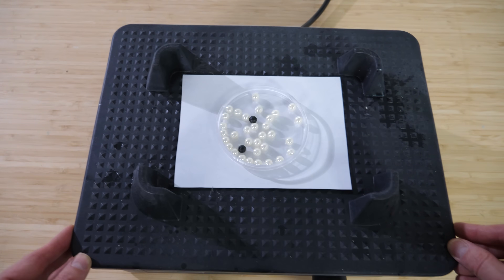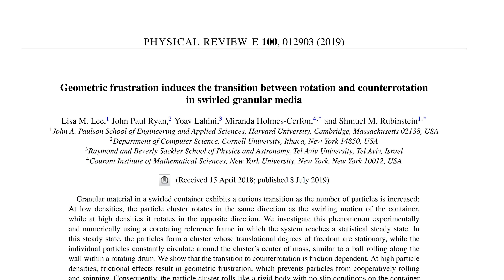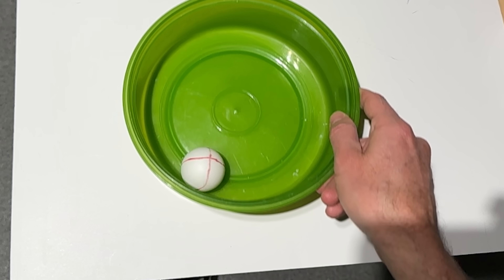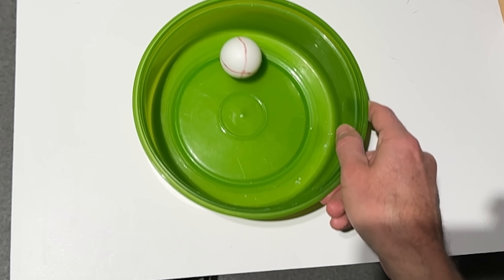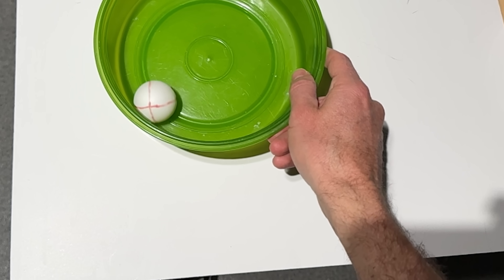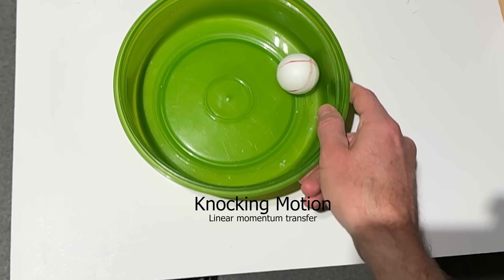So what is happening here? This is part of a physics problem that scientists have been studying for decades. Let's start by looking at a single ball. When you make a swirling motion, there are two types of motion this can cause. The first is just linear momentum transfer — the sides of the dish knock the ball, causing it to move in the same direction as the swirling dish.